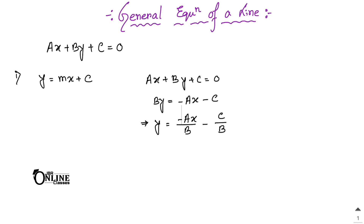Comparing with y = mx + c, we get m = -a/b, meaning the slope equals minus the coefficient of x divided by the coefficient of y. The y-intercept equals minus the constant term divided by the coefficient of y. That is the rule to reduce the general equation to slope-intercept form.